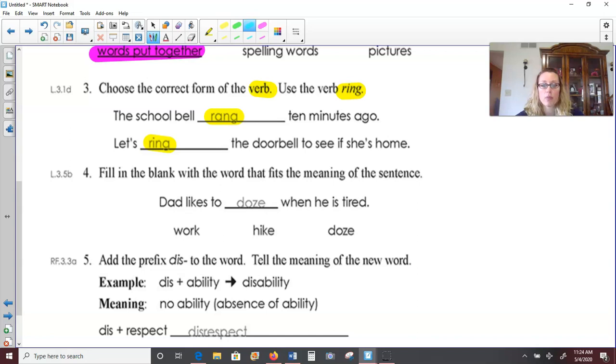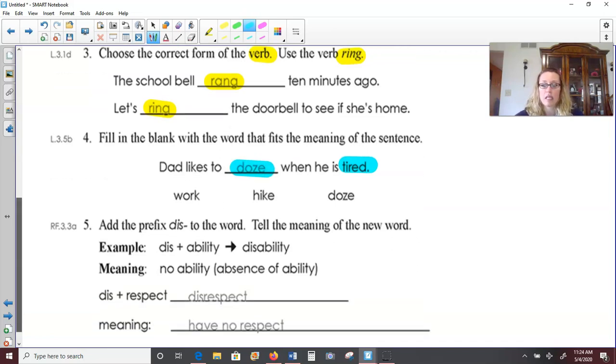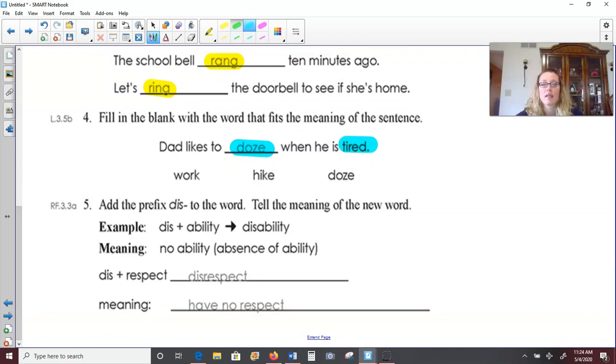Number four, fill in the blank with the word that fits the meaning of the sentence. Dad likes to blank when he is tired. So dad likes to work when he is tired. I certainly don't like to work when I'm tired. Dad likes to hike when he is tired. Are you kidding me? That would make me even more tired. I'm going to say dad likes to doze when he is tired. That means he likes to sleep, take a nap.